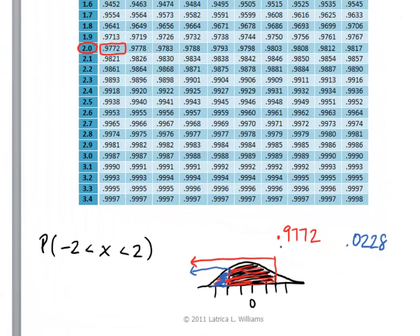If I take .9772 minus .0228, it'll give me this original shaded piece that we were interested in, which is the area between negative 2 and positive 2. .9772 minus .0228 is .9544.